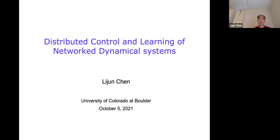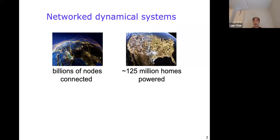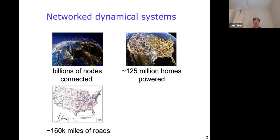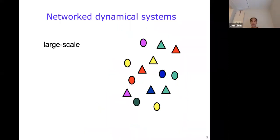Before diving into that, I need to first explain exactly what I mean by a networked dynamical system. Here are a few familiar examples. The internet connects billions of nodes including computers and other devices. The electricity network powers more than 100 million homes in the U.S. The National Highway System consists of 160,000 miles of roads connecting almost every city and town in the nation. The first thing to notice is that all these systems are large-scale systems composed of a large number of components and subsystems.